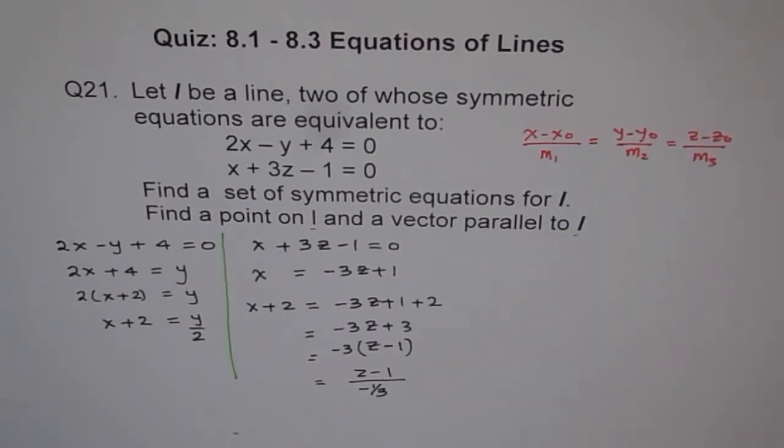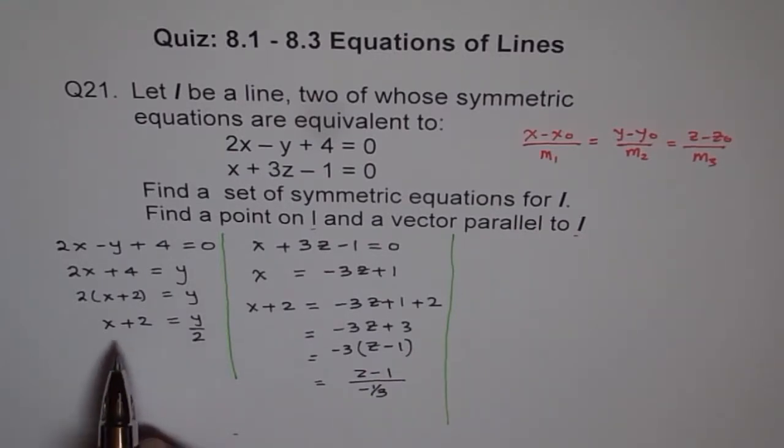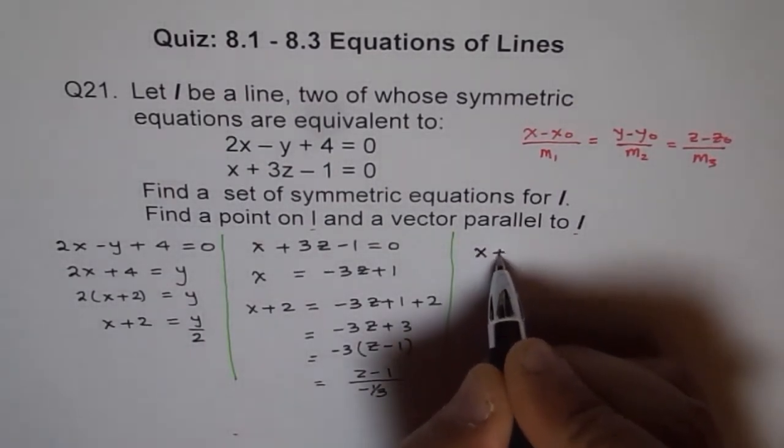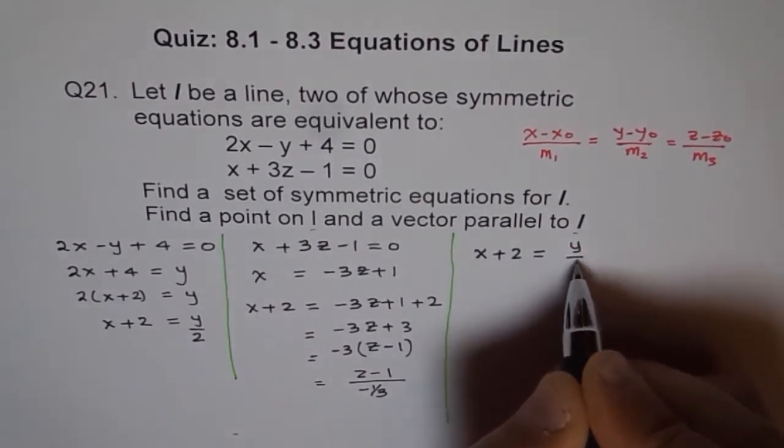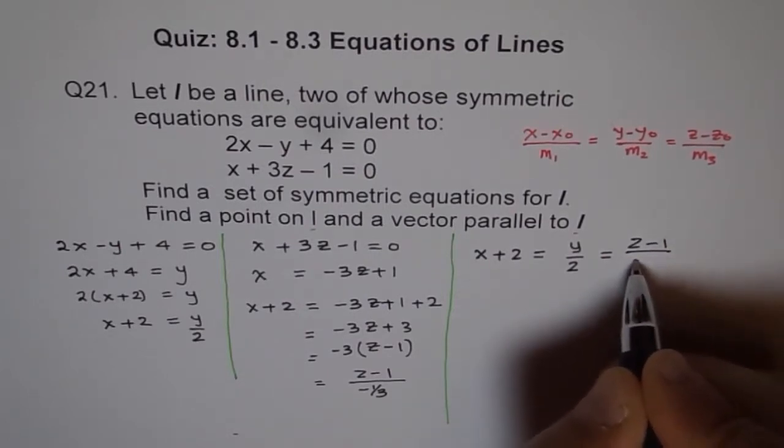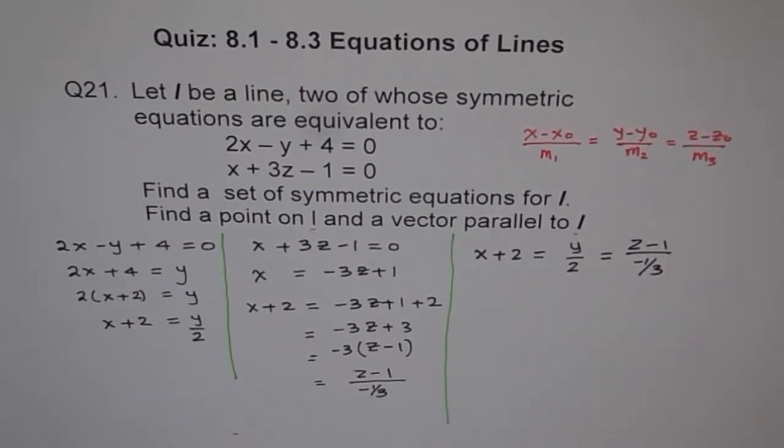Now, we got x plus 2 equals z minus 1 over minus 1 over 3. Do you see that corresponds to the third part of our symmetric equation. Well, that brings us closer to the solution. You can now see the solution. That's the beauty of vectors. You can sometimes see the solution. Vectors is all about visualizing things. If you could visualize, you could be good at this subject. So let's equate these two. They are similar. Both are x plus 2.